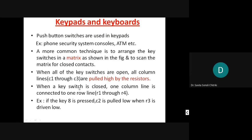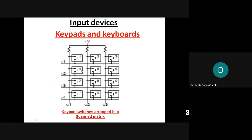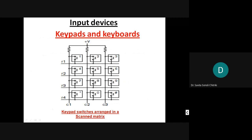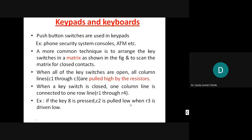When a key switch is closed — say key number 4 is pressed — it is connected to column C1 and row R2. So when a key switch is closed, one column line is connected to one row line. For example, if key 8 is pressed, it connects row R3 and column C2, so C2 is pulled low when R3 is driven low. This is how each key press is identified.